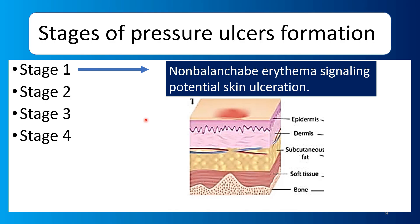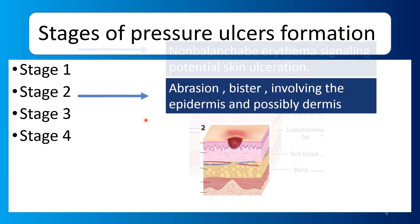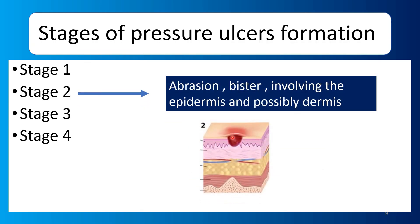In Stage 2, the ulcer has moved slightly lower into the dermis. The skin will develop a blister — the epidermis layer is involved and possibly the dermis is also involved.